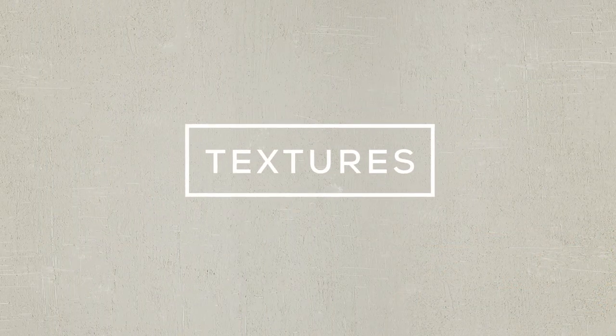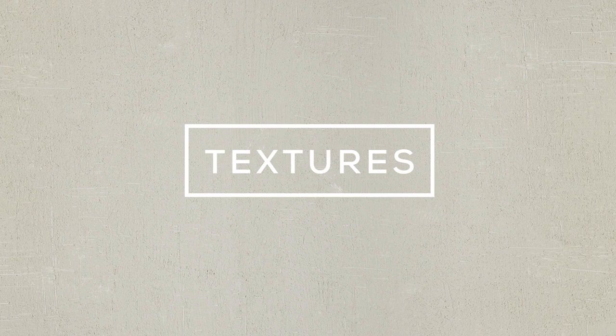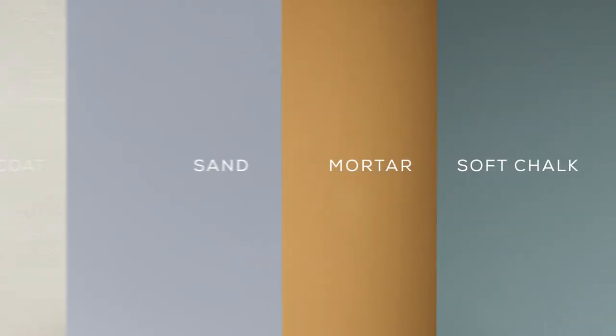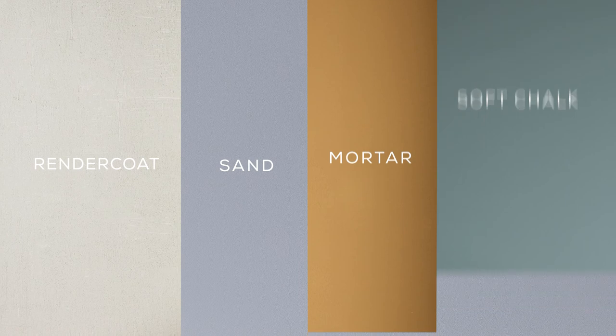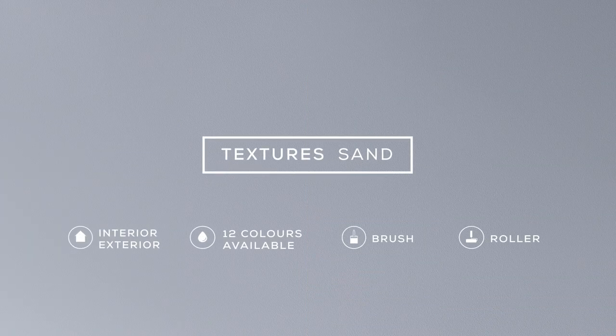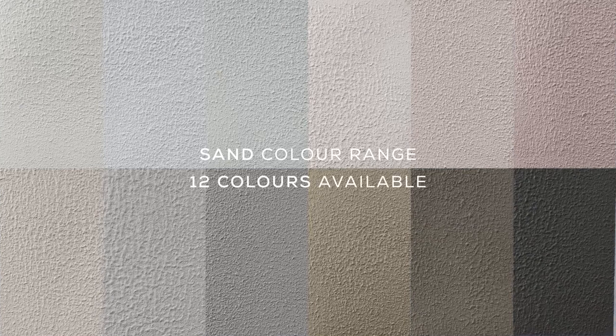Today we'll showcase how you use and apply Hames Artisan Textures. Artisan Textures comprises four unique products: Soft Chalk, Mortar, Sand and Render Coat. In this tutorial we'll create Textures Sand in Resort Blue, one of the 12 unique colours in the Sand range.